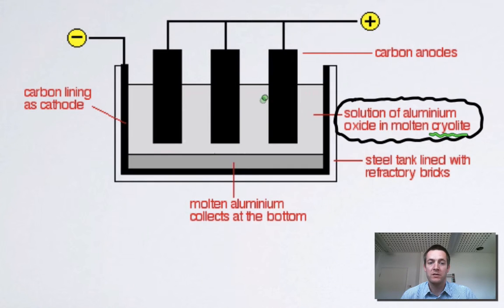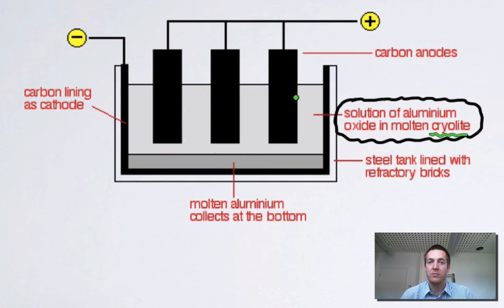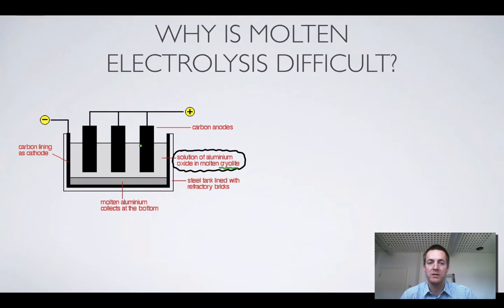Another problem with this — although it's not something you're likely to be examined on — is the fact that the carbon anodes will react with the oxygen that is produced at these electrodes because of the extremely high temperature, and so we'll have to keep replacing the carbon anodes. That gives us another explanation for why aluminium is such an expensive metal, because these anodes are quite expensive to replace.